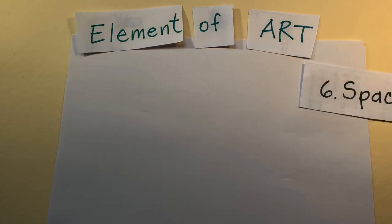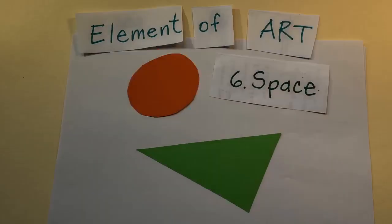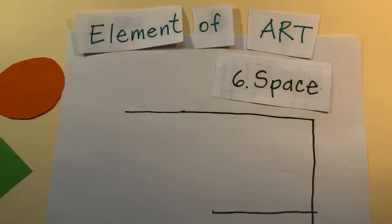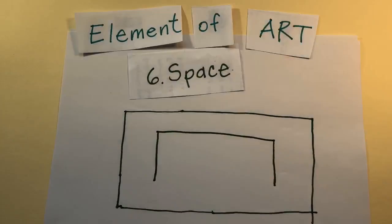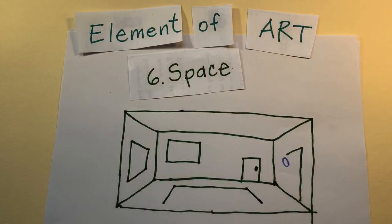The sixth element is space. That means how far apart or how close together two shapes are. If they overlap, one looks like it's in front. Space also means creating the illusion of space in a drawing or a painting.